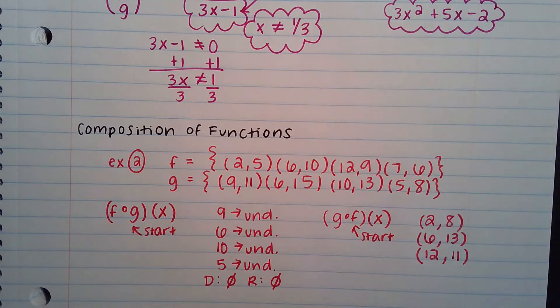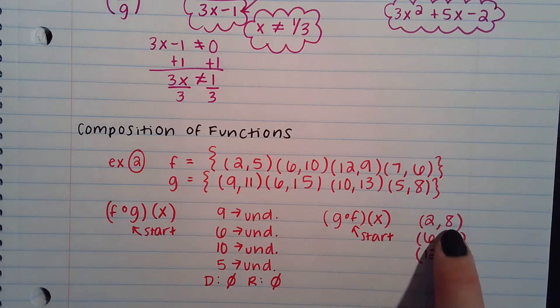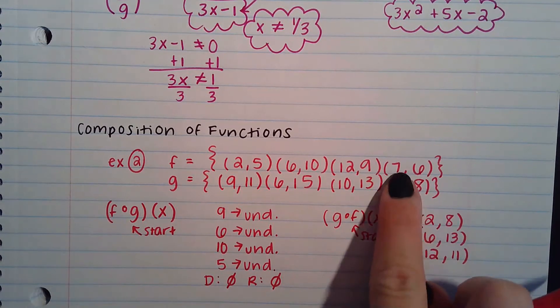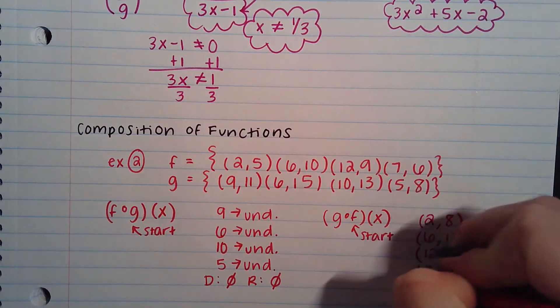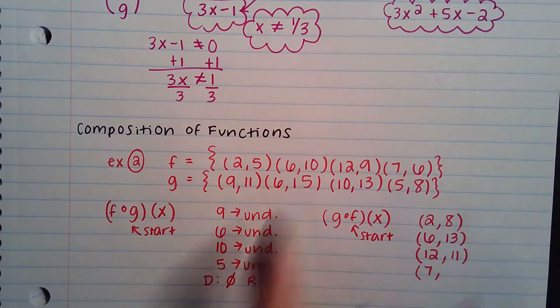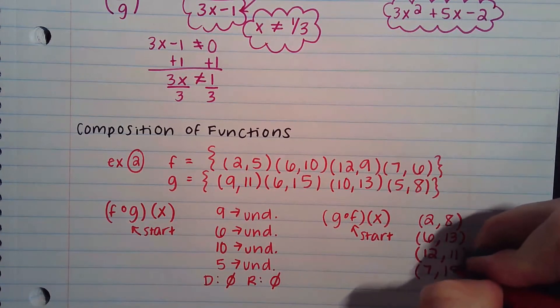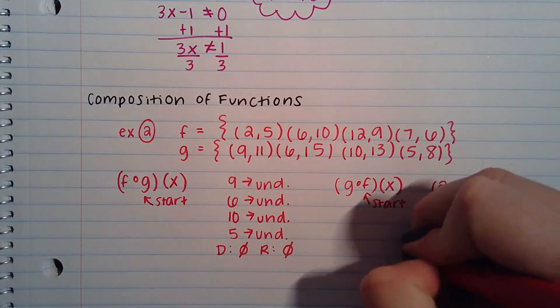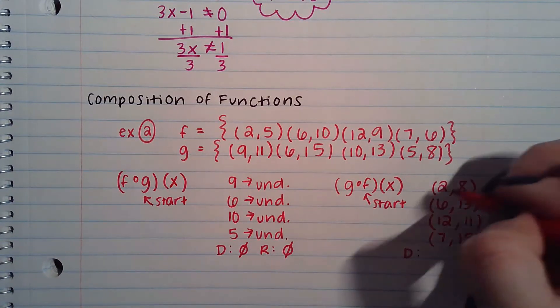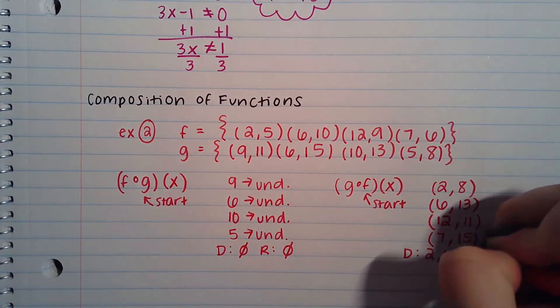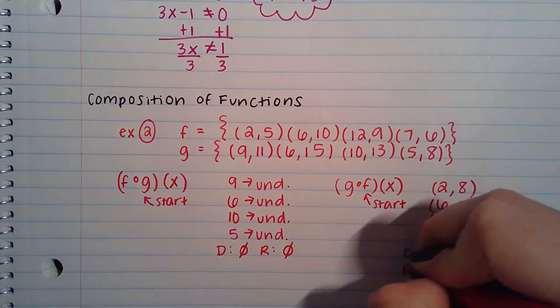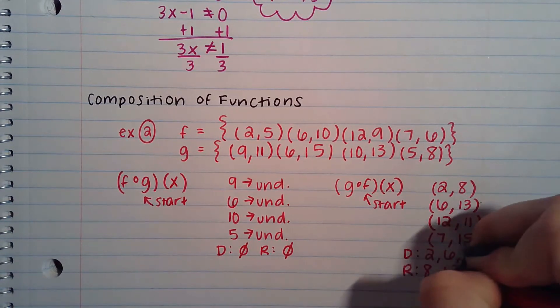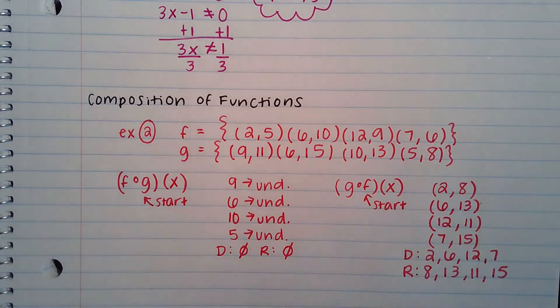And if you notice again, you're starting with, what number did you start with? What number did you end up with? This is the x value of g. This is the y value of f. That's how you're pairing them up. Last one, 7 matches with 6. 6 goes with 15. So this one was defined at all four points, which means we should mention the domain and range. The domain would be all of your x values: 2, 6, 12, 7. And the range would be all of your y values: 8, 13, 11, 15. That's the end of that problem.